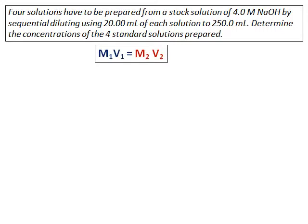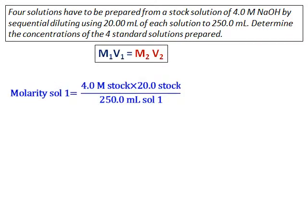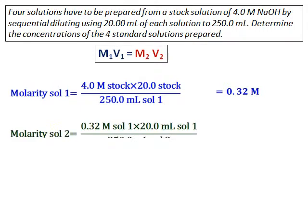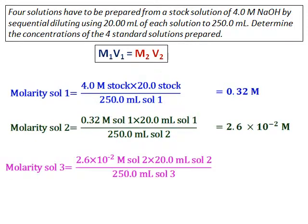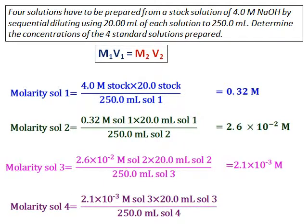Continuing with the same question, we use the formula M1V1 equals M2V2. The molarity of Solution 1 is calculated by taking the 4 molar stock solution, 20 milliliters of it, making it into 250 milliliters — that gives 0.32 molar. To calculate the molarity of Solution 2, we use the concentration of Solution 1 multiplied by 20 and divided by 250. Similarly for Solution 3, we use Solution 2's concentration, and for Solution 4, we use Solution 3's concentration. In all cases, we take 20 milliliters and divide by 250. This process is called serial dilution — a concentrated solution is diluted, and the prepared solution is further diluted each time.